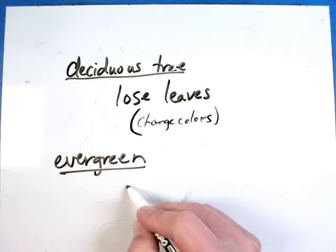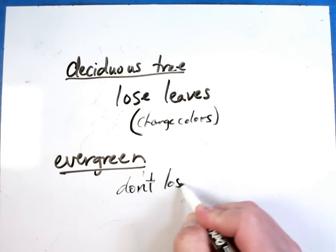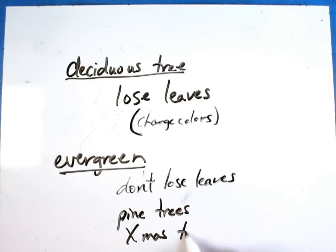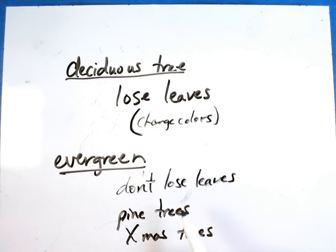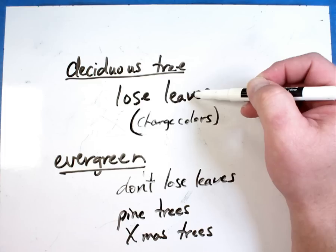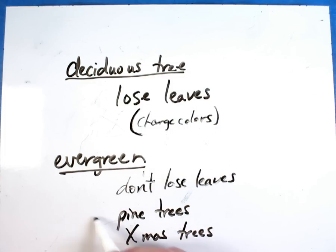Evergreen trees don't lose their leaves. Pine trees are a good example — maybe the Christmas trees that you buy at Christmas. In the case of an evergreen, they have the little pine needles. If you don't water them, they'll fall off. But even a deciduous tree getting normal water — when it becomes fall, the leaves are going to fall off. An evergreen pine tree or Christmas tree will keep their needles. If they don't get enough water, they'll start to brown and die, and those needles will fall off because the actual tree itself has died.